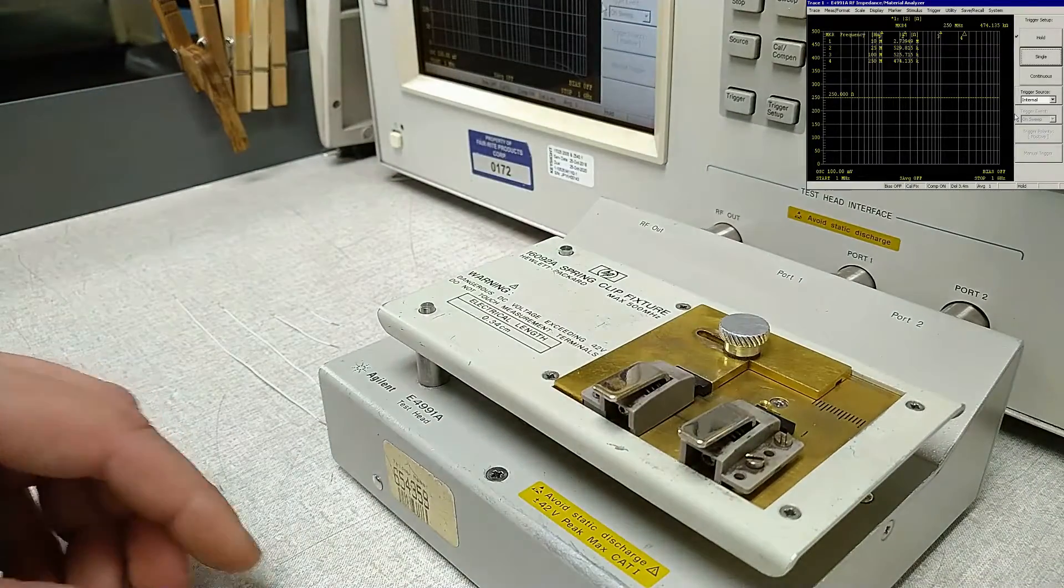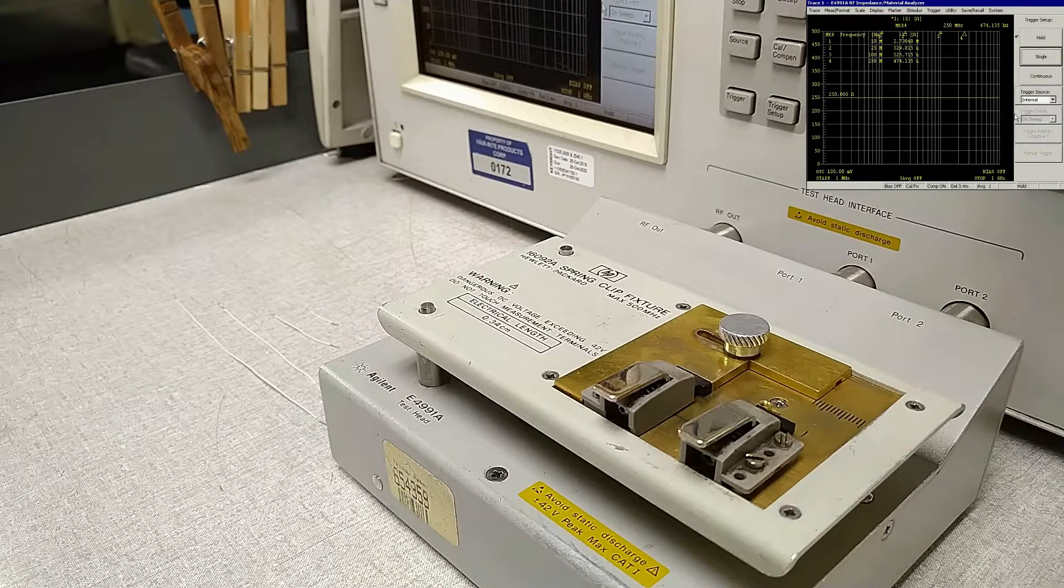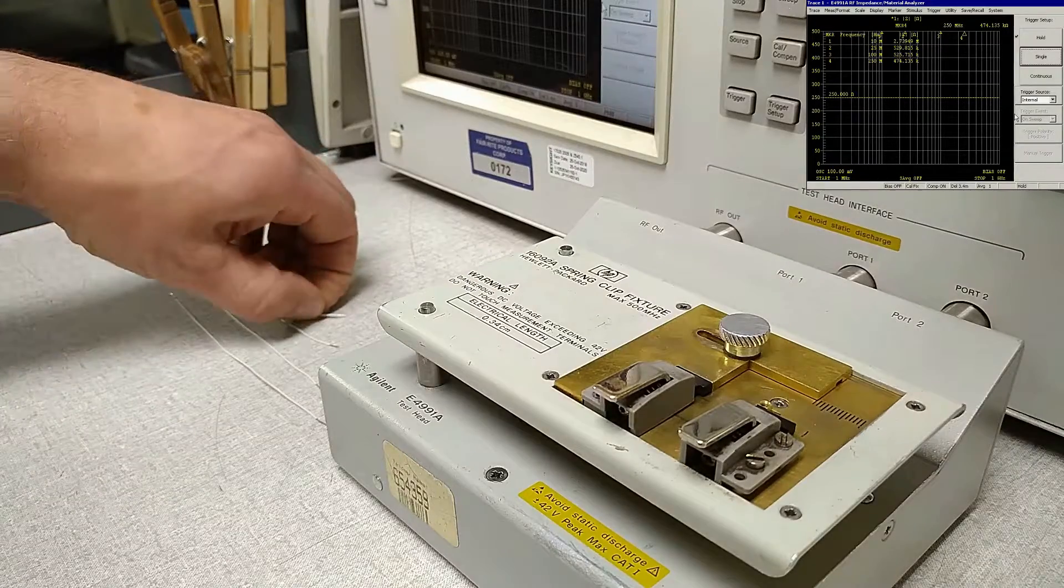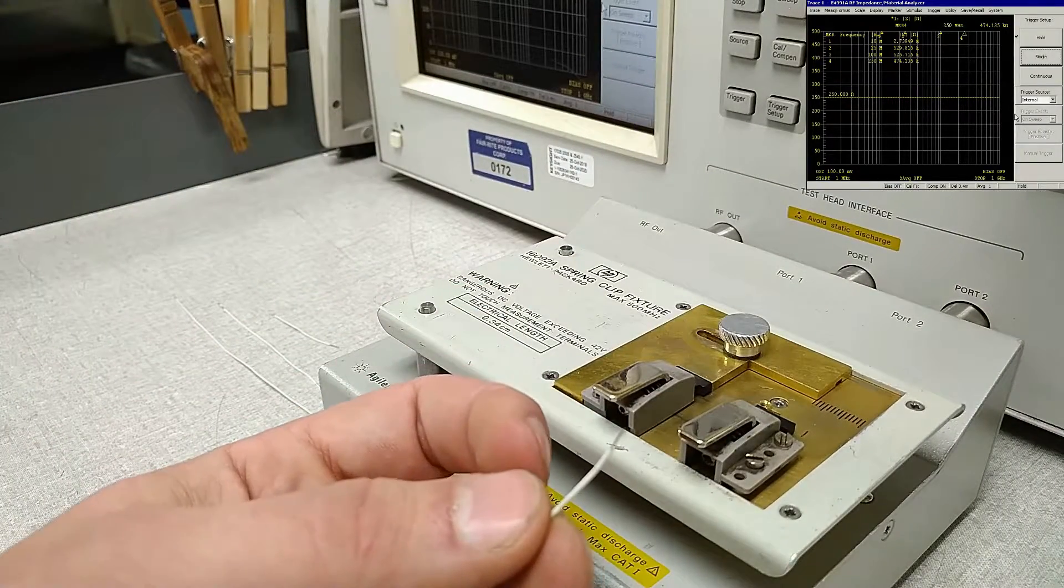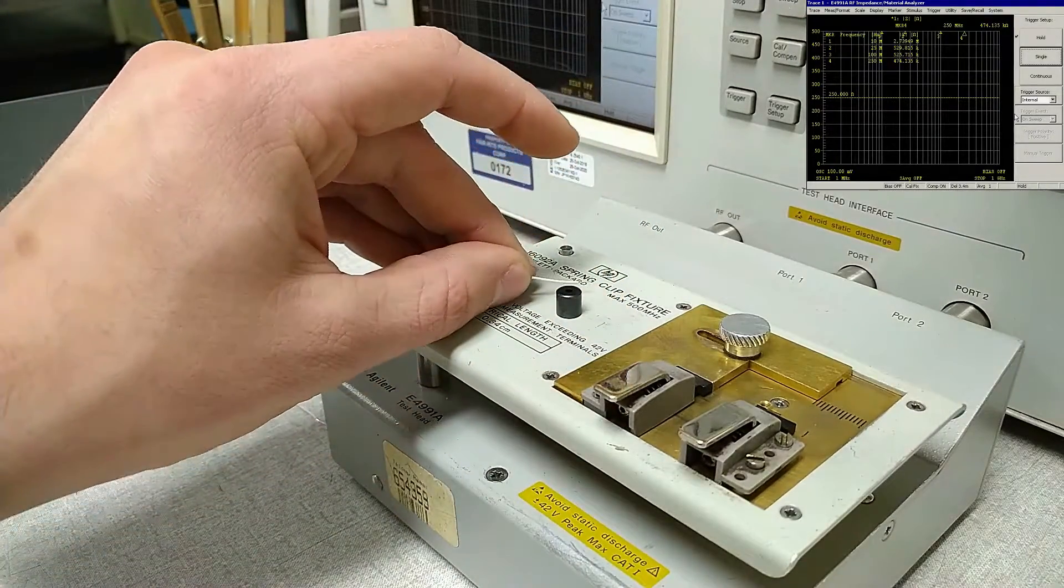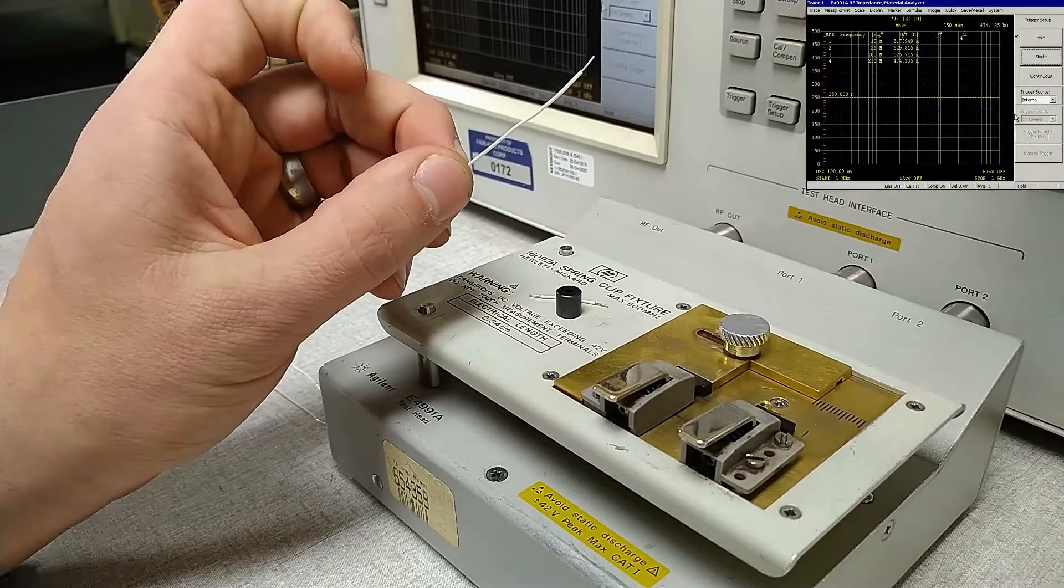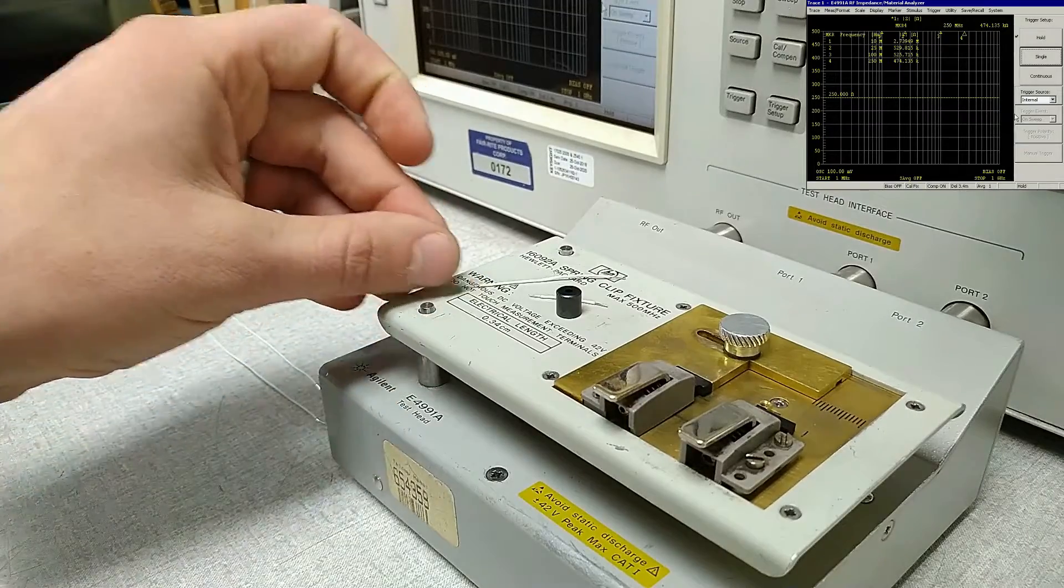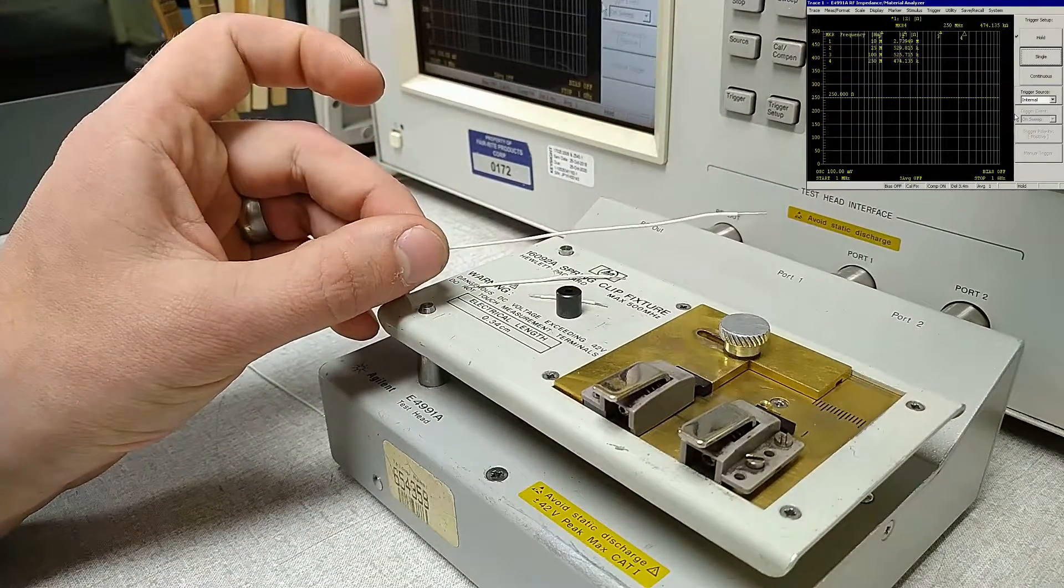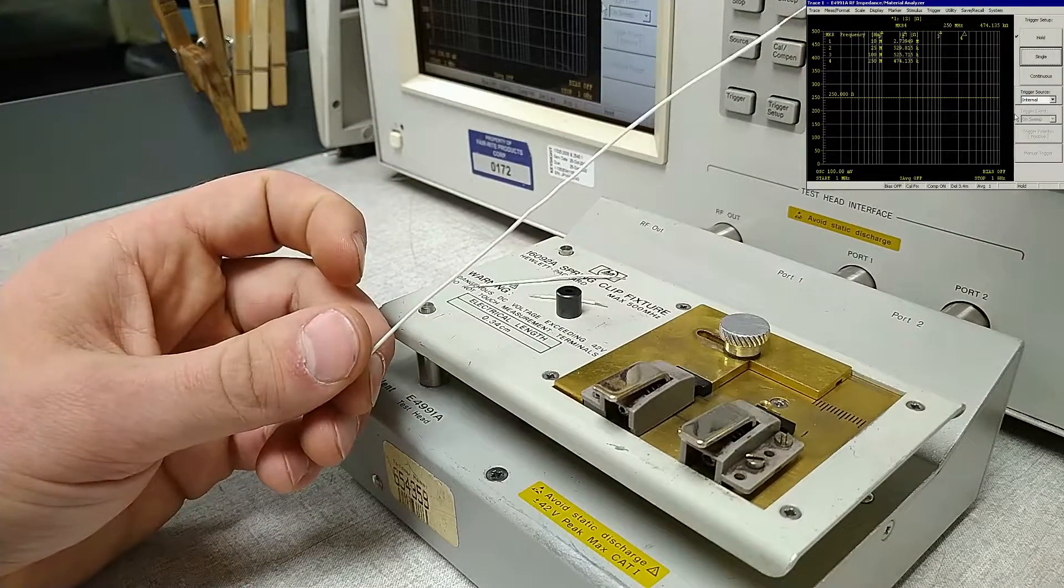We're going to be running impedance curves from one megahertz to one gigahertz. We're going to be using four different wire lengths: a 25 millimeter wire length, which is our standard wire length that we would use for a part like this, a 51 millimeter wire length, a 102 millimeter wire length, and a 152 millimeter wire length.